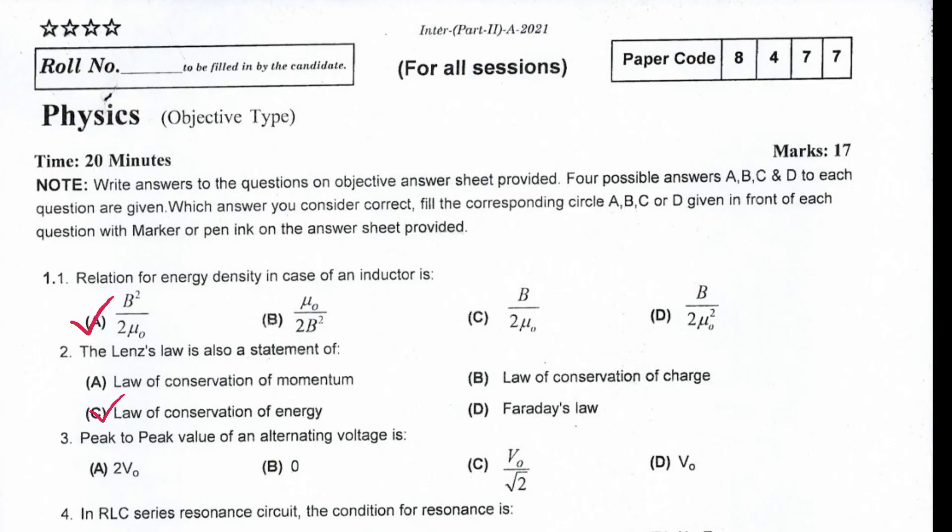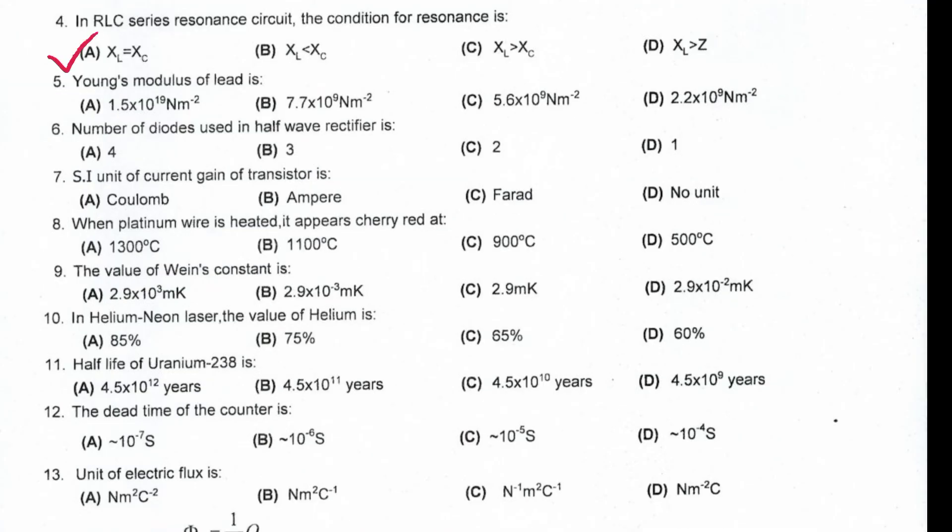Peak to peak value of an alternative voltage is 2V naught. In RLC series resonance circuit, the condition for resonance is XL equal to XC.